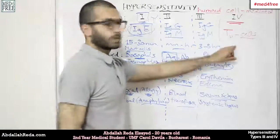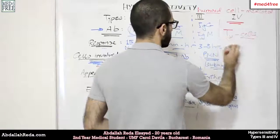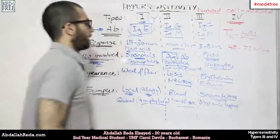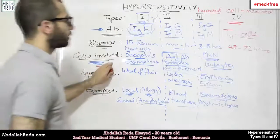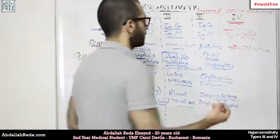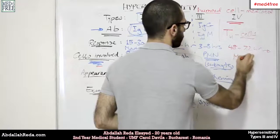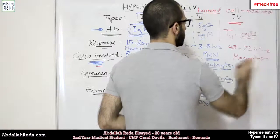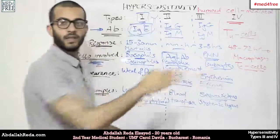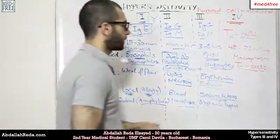That kind of hypersensitivity takes more time in order to get a reaction — we would have from 48 to 72 hours, or even longer. The cells involved are as follows: we have the T helper cells, which produce cytokines. The cytokines are going to activate either macrophages or cytotoxic T cells that are going to act directly on the cells recognized as non-self in the body.